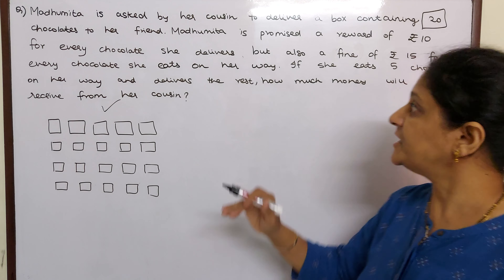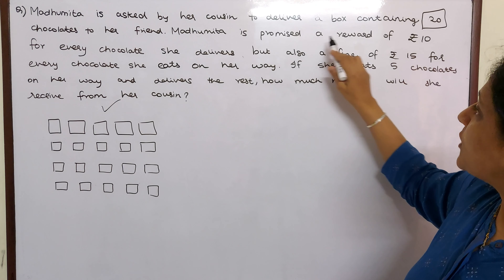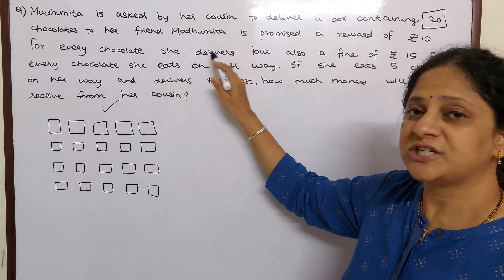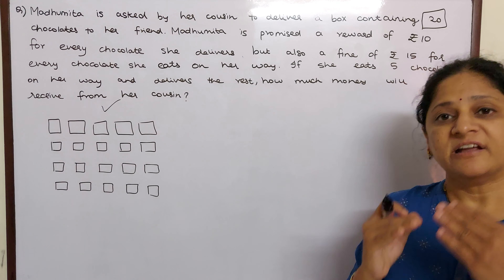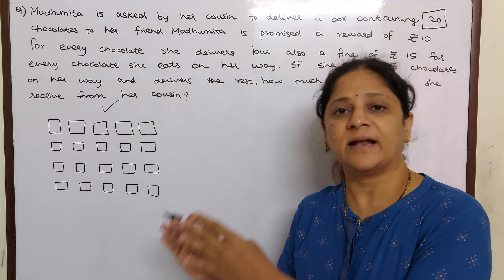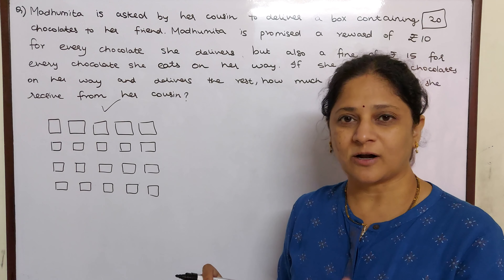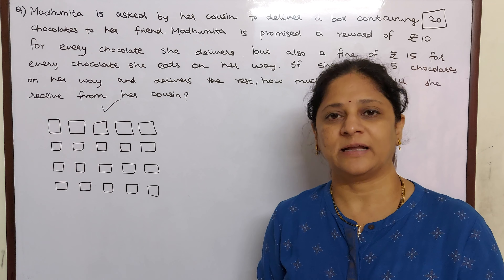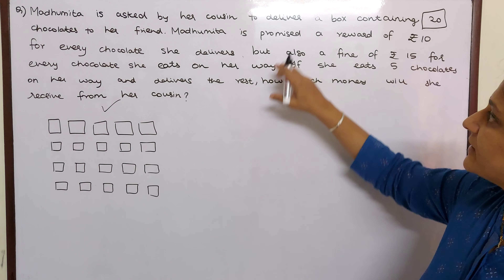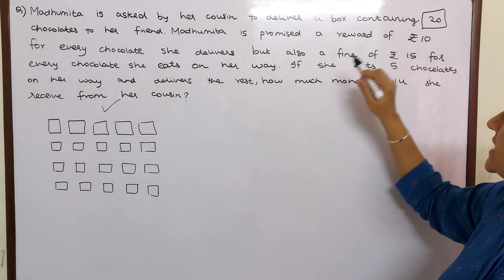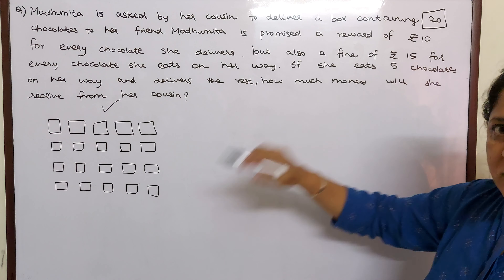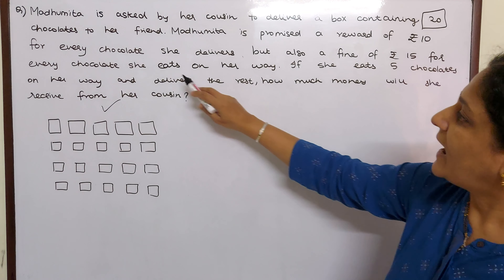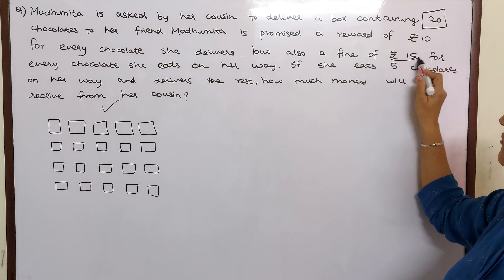But what is the condition? Madhumita is promised a reward of Rs. 10 for every chocolate she delivers. That means if my friend receives them, you will get Rs. 10 for every chocolate — because children have the habit of eating chocolates! Chocolates are very precious to every child. So she is keeping a reward and a punishment: how many chocolates you deliver, you will get Rs. 10 for each. And if you eat on the way, a fine of Rs. 15.